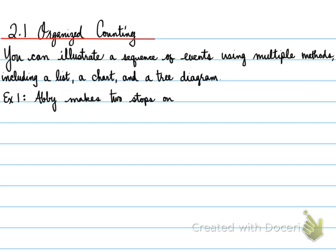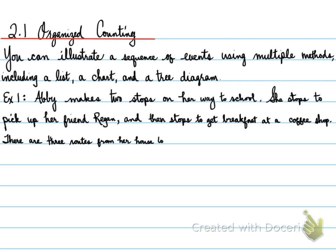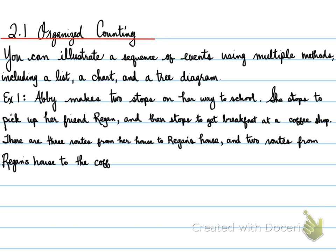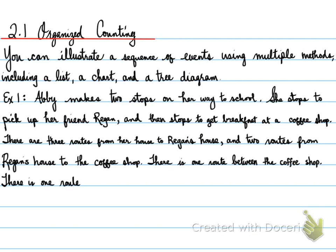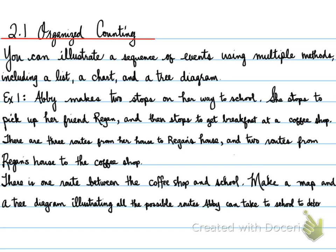Example number one. Abby makes two stops on her way to school. She stops to pick up her friend Reagan, and then stops to get breakfast at a coffee shop. There are three routes from her house to Reagan's house and two routes from Reagan's house to the coffee shop. There is one route between the coffee shop and the school. Make a map and a tree diagram illustrating all the possible routes Abby can take to school to determine the total number of possible routes.